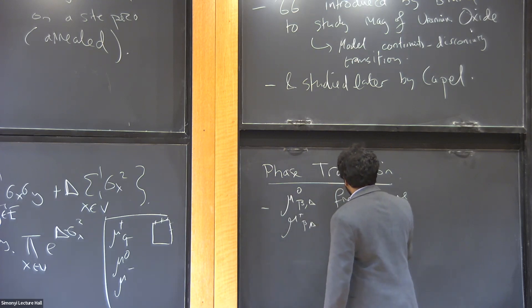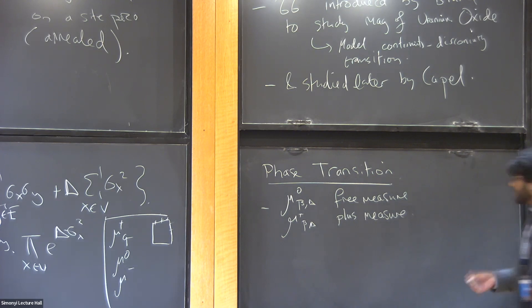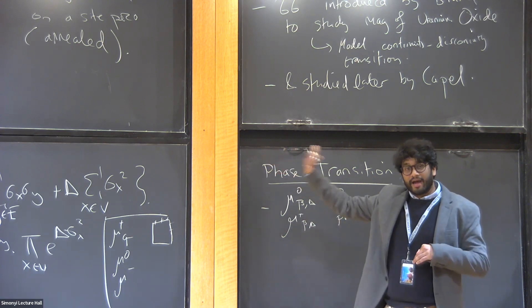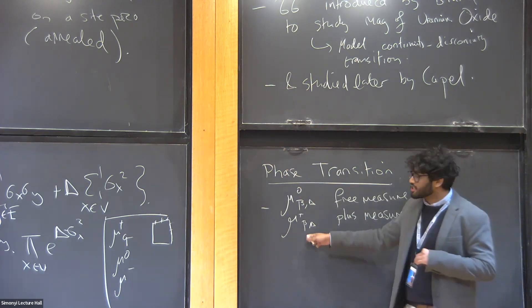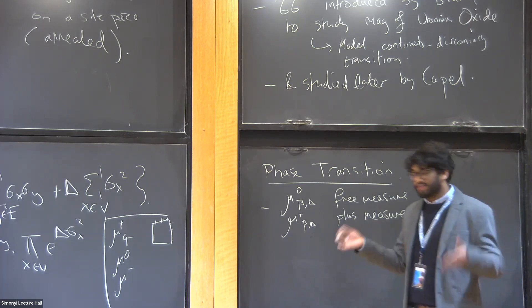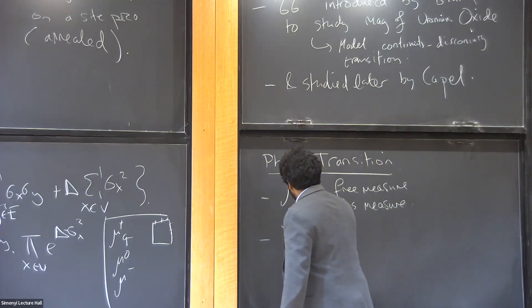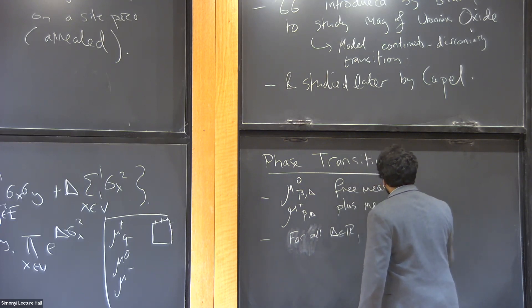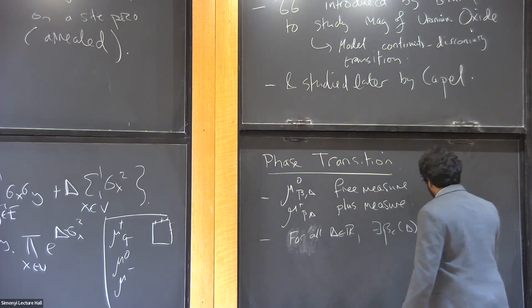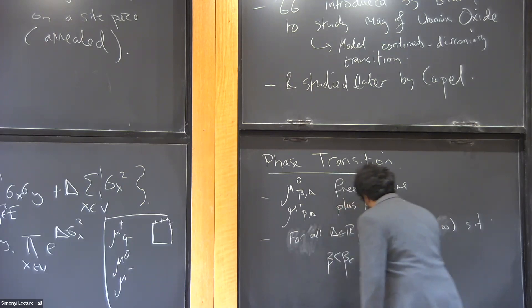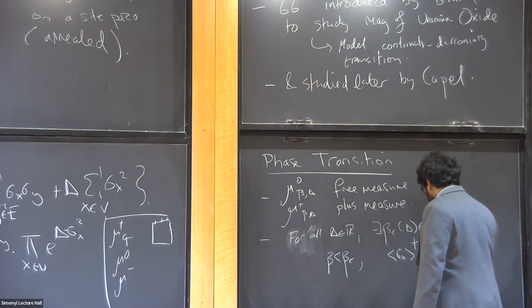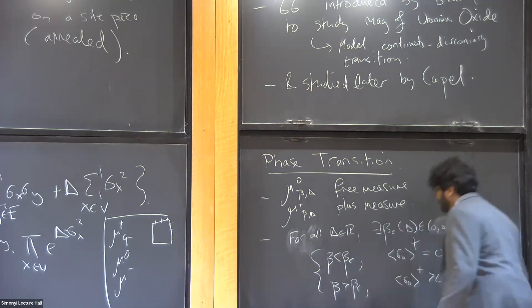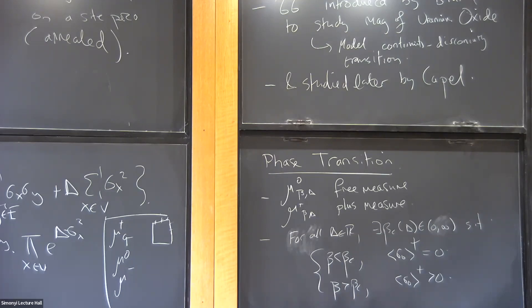It is well known that for every fixed delta, there's a critical point beta_c(delta) such that for beta large enough, the system is magnetized — the expectation of the spin at zero is positive under the plus measure — and for beta small enough, the magnetization is zero. So there's a beta_c(delta) such that if beta is less than beta_c, the magnetization is zero, and if beta is greater than beta_c, it is strictly positive. This is the phase transition.